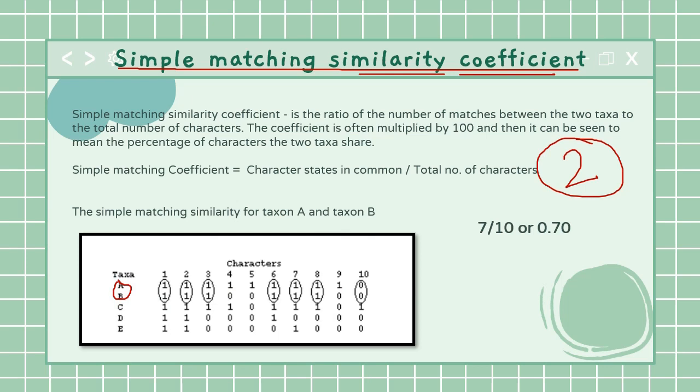Now how do I calculate this index? This is the simple formula given: the character traits that are common - between A and B I had seven traits that were common - divided by total number of characters. I had 10 different characters selected, so 7 by 10 which is nothing but 0.7.